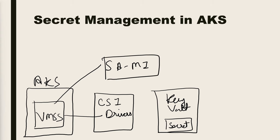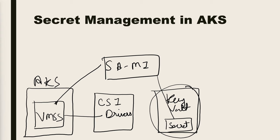The System Assigned Managed Identity will be assigned to the virtual machine scale set. We will first enable it on the virtual machine scale set, then assign permissions on the managed identity using the access policy of the Key Vault. At this point, our AKS cluster has access to the Key Vault service. The next step is to create a configuration — the Secret Provider Class — so that AKS will look for the particular Key Vault and particular secrets, keys, or certificates.